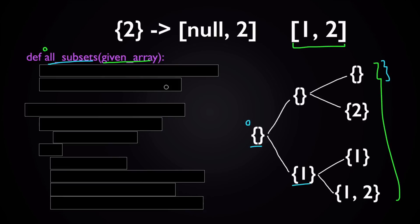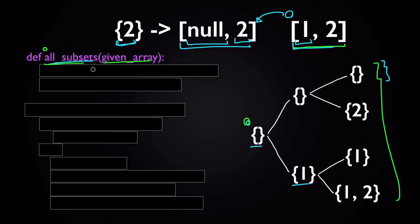For example, if you have a set of two and you're given the array one and two, that set of two can be represented with null and two — null meaning one is not in this set, and two meaning two is in this set. This way we can represent any subset of this array with an array of the same length. To initialize this initial empty set at the beginning of allSubsets, we initialize an array whose length equals the given array's length.